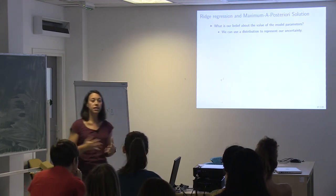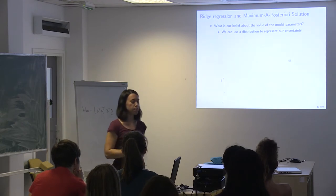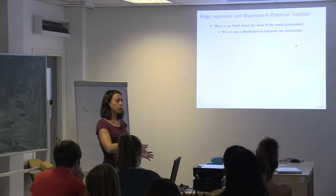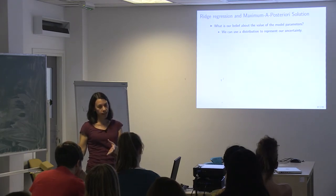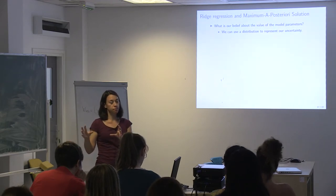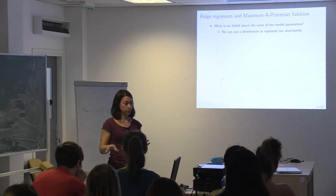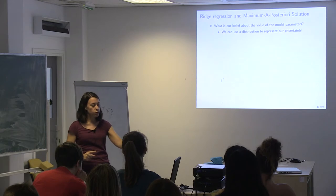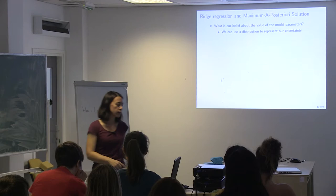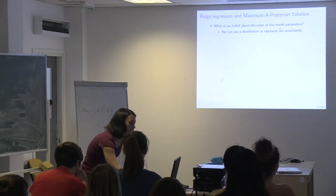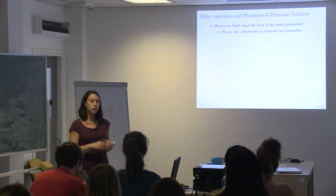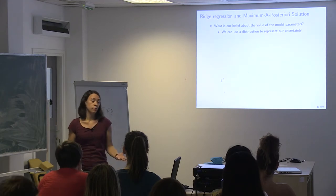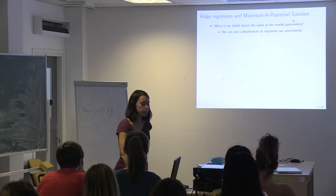Now we're going to look at another type of learning: maximum a posteriori (MAP). We're not sure what the model parameters should be, and some things may be more or less important. So we represent our uncertainty using distributions — we put a prior distribution over each weight w0, w1, etc., representing what we think those weights should be before seeing any data.